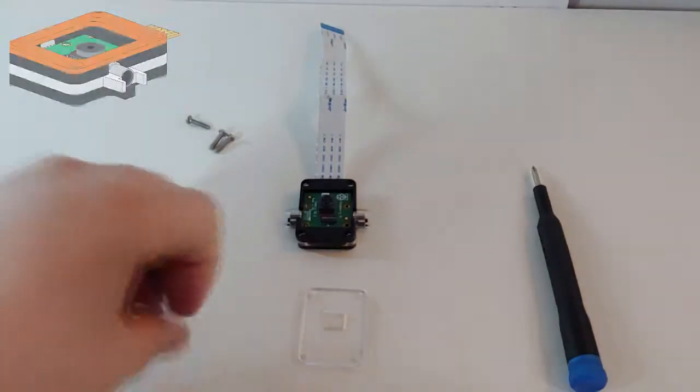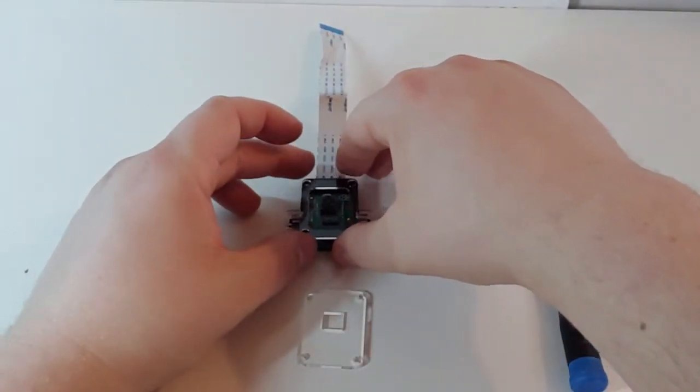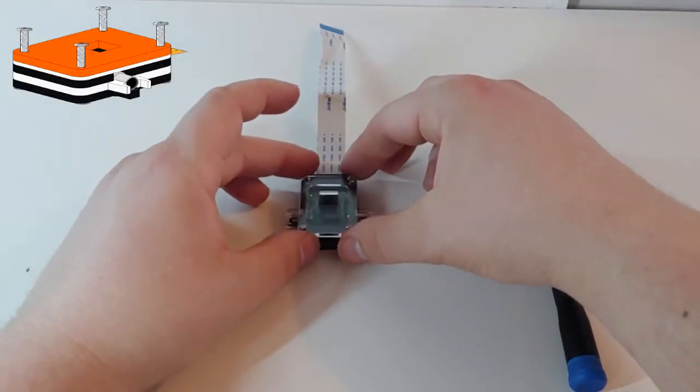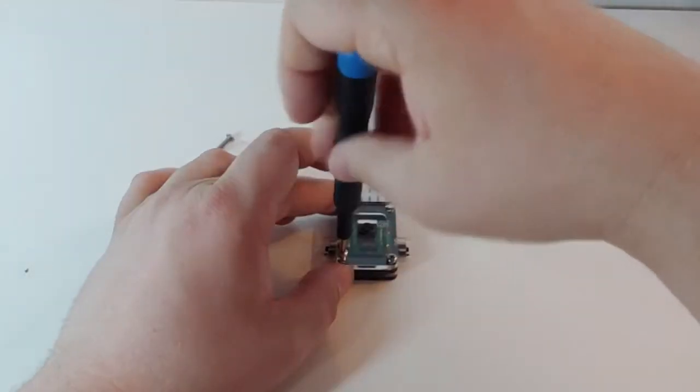Next you'll want to layer on the adapter plate and the face plate. And finally, you'll want to screw in the four half inch screws.